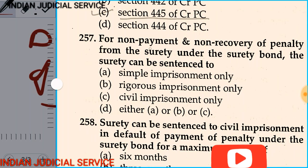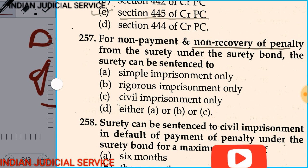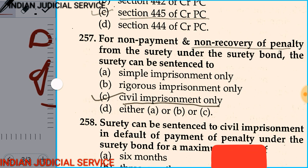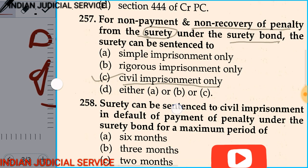Question number 257: For non-payment and non-recovery of penalty from the surety under the surety bond, the surety can be sentenced to — option A: simple imprisonment only, option B: rigorous imprisonment only, option C: civil imprisonment only, option D: either A, B, or C. This is an important question asked in many exams like UP, Jharkhand, Rajasthan, and Uttarakhand. The answer is option C: civil imprisonment only.